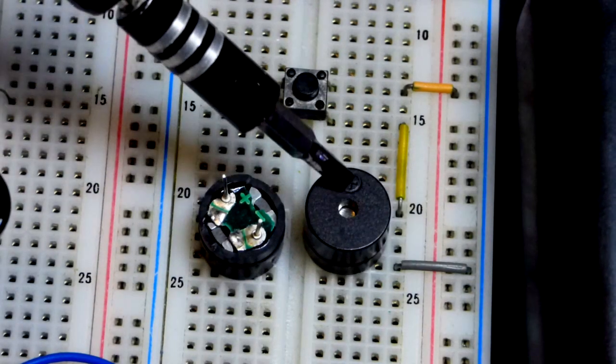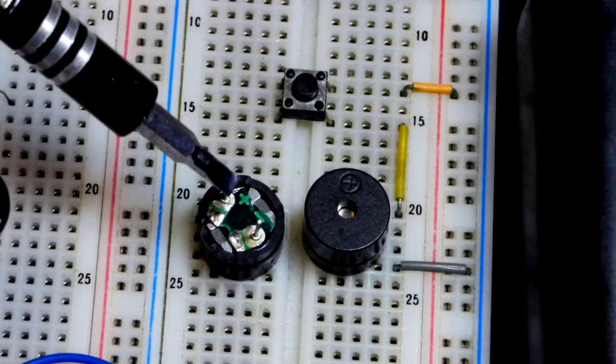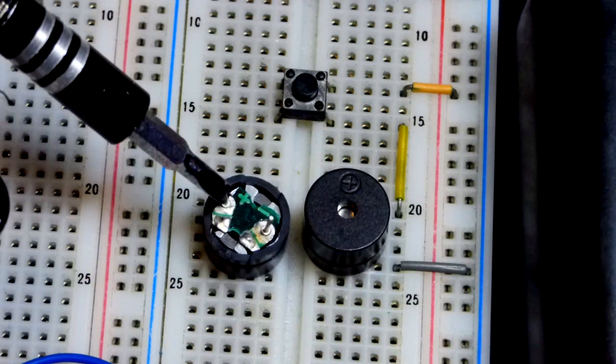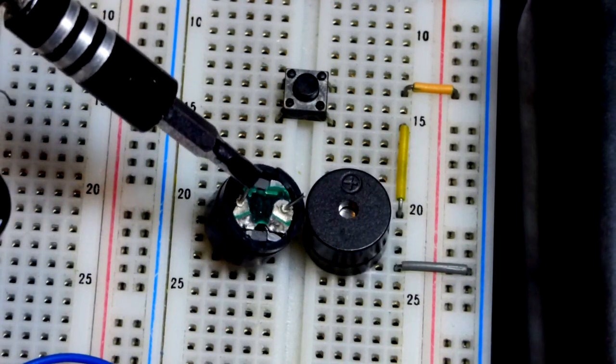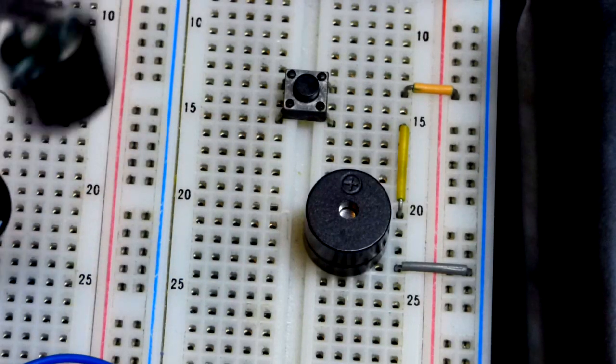So now in this video we're going to look at the active buzzer. Next to it is actually a passive buzzer. We've got the pin there to the left, you see a plus symbol, and the pin to the right, we have a negative symbol. You can see the polarity.